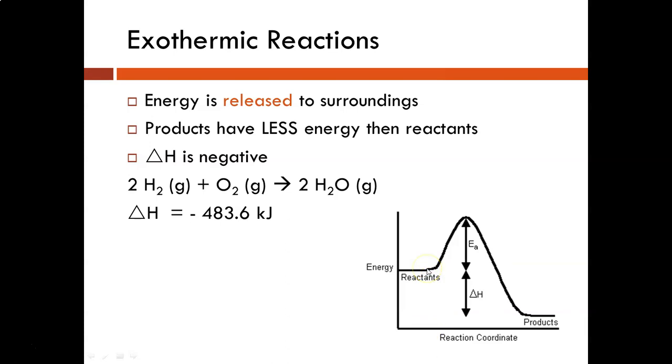You'll notice the products are lower in energy than the reactants. So this change in the energy, the difference between the energy of the reactants and the products, that is our delta H for the reaction. Again, in an exothermic process, the products are clearly lower in energy than the reactants. So energy has been released.